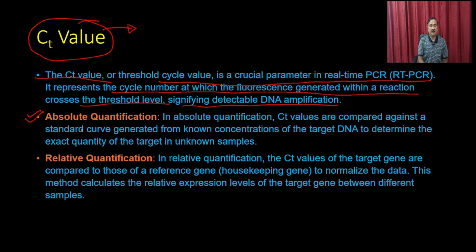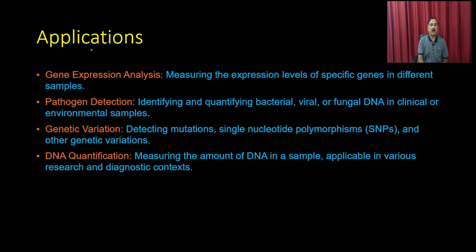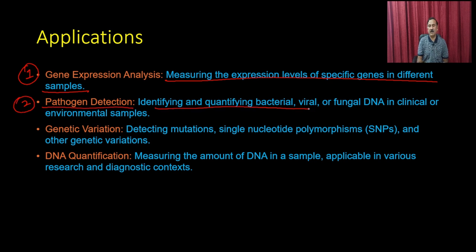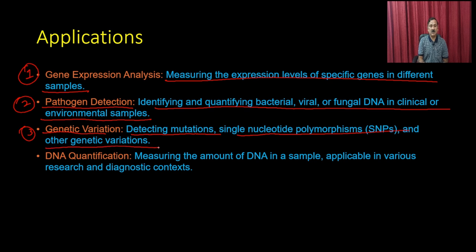The CT value, or threshold cycle value, is a crucial parameter in real-time PCR — familiar from COVID testing. It represents the cycle number at which fluorescence crosses the threshold level, signifying detectable PCR amplification. Applications of qPCR include: gene expression analysis measuring expression levels in different samples, pathogen detection identifying bacterial, viral, or fungal DNA in clinical or environmental samples, genetic variation detection including SNPs and mutations, and DNA quantification applicable in research and diagnostics.